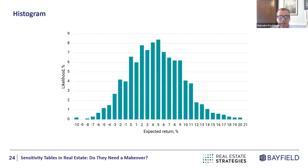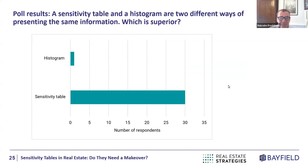That's my pitch for switching from sensitivity tables to histograms. When we ran the poll before this presentation, we got a rather strong result: 30 respondents favoured a sensitivity table and only one favoured a histogram. So I feel like I'm starting this presentation 30 to 1 down — and it wasn't even my own vote that went for the histogram. Maybe we can call it 30 to 2.